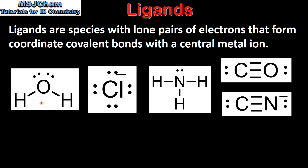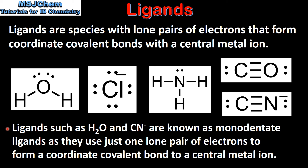Here we have some examples of ligands: H2O, the chloride ion, NH3, carbon monoxide and the cyanide ion. Each ligand has a lone pair of electrons which is used to form a coordinate covalent bond with a central metal ion. Ligands such as H2O and the cyanide ion are known as monodentate ligands as they use just one lone pair of electrons to form a coordinate covalent bond to a central metal ion.